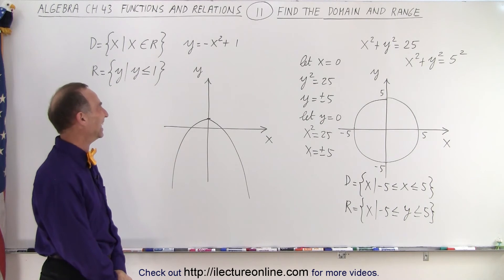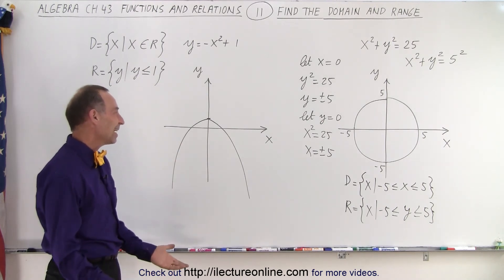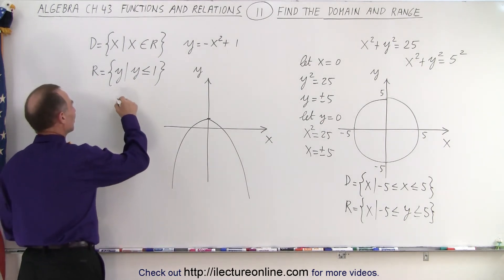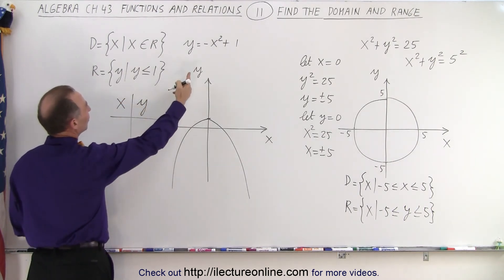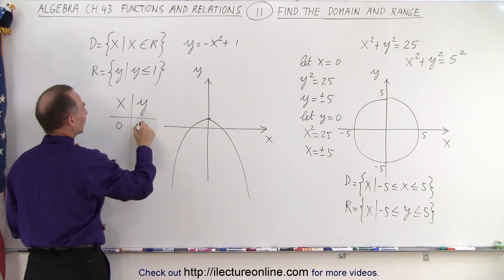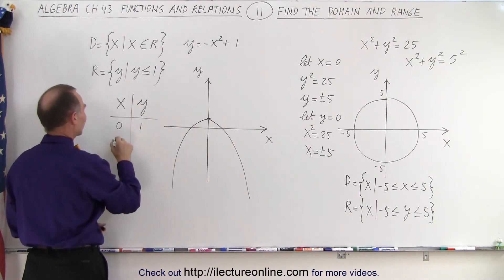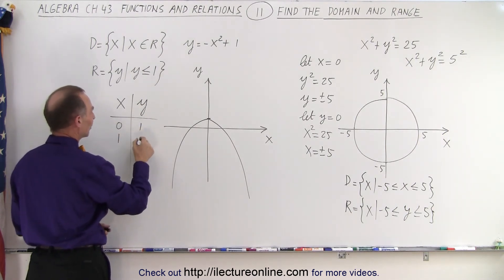How about the other one? The other one, it's the same thing. You probably would want to set up a table of values. You put in x values, you put in y values. And the first thing you want to do is when x equals zero, then y equals one. Now, when x equals one, then y equals zero. And when x equals two, then y equals negative three.